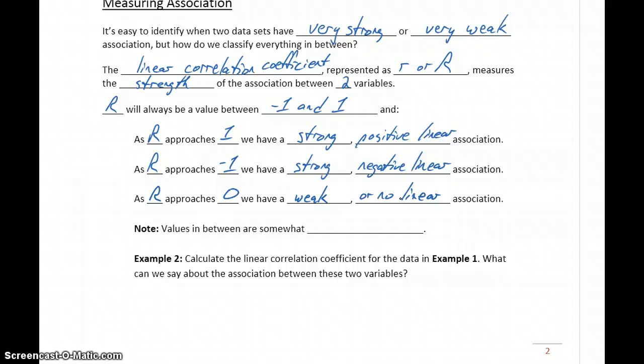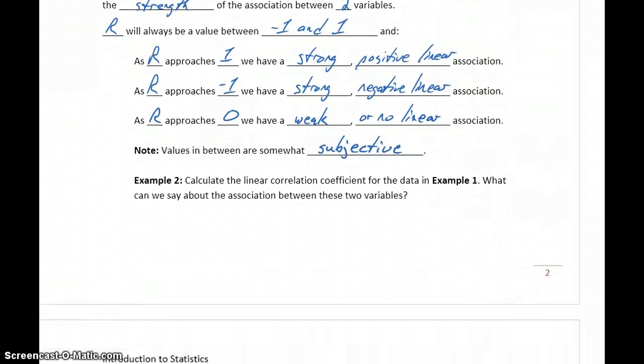Now one thing to keep in mind here, is that values in between 1 and 0, or negative 1 and 0, are still somewhat subjective. So if you have a correlation coefficient of 0.6, that's closer to 1, but not terribly close, versus 0.3, which is closer to 0, but still not quite at 0. So there is still some subjectivity with some of those different values.